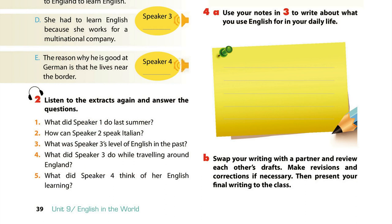Activity 2: Listen to the extracts again and answer the questions. Speaker 1: My first language is French, but I live near the border, so I'm reasonably good at German. I can also get by in Italian. We went to Rome last summer and I picked up the basics. Speaker 2: My mother is Spanish and my father is French, so I'm bilingual. I'm also fluent in English, which I need for my job. I can have a conversation in Italian, but it's a bit rusty.